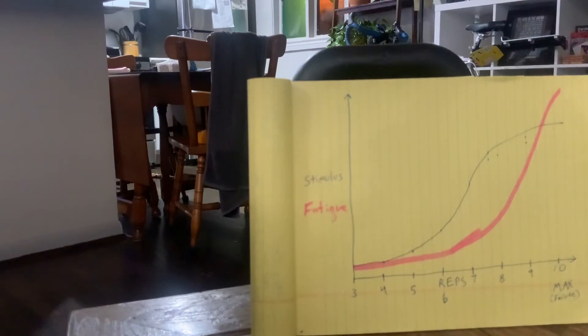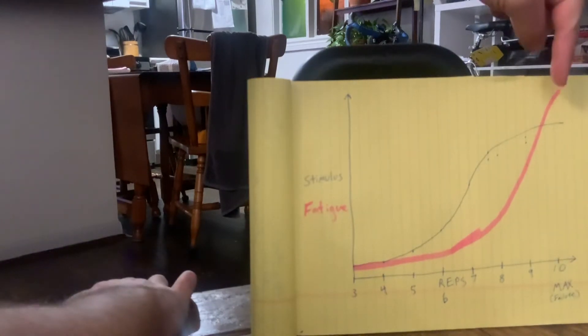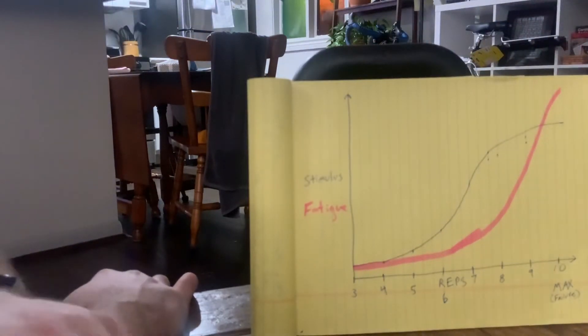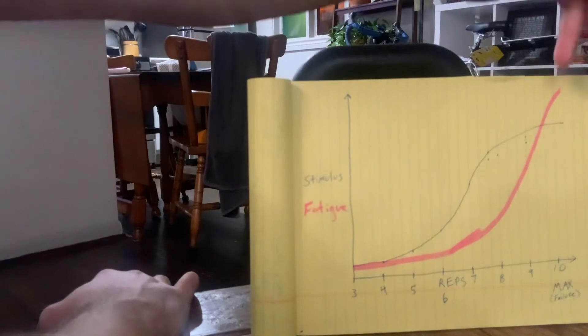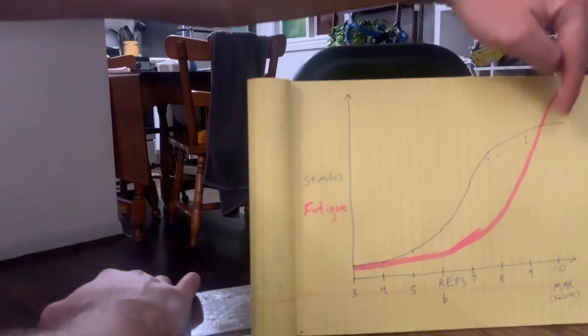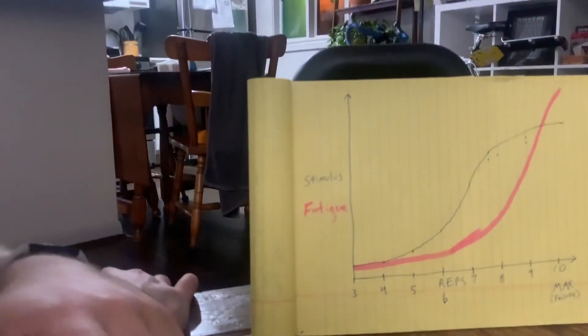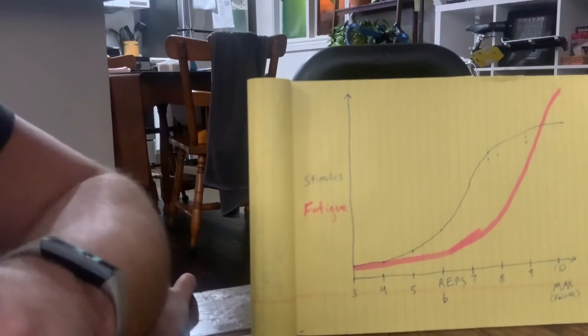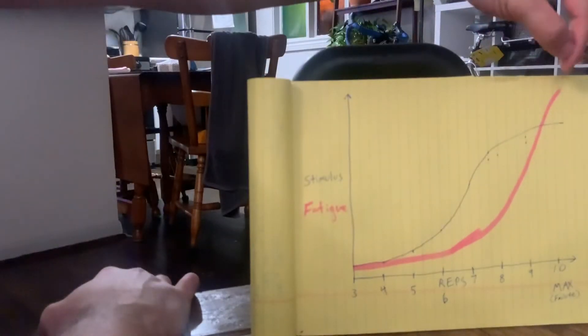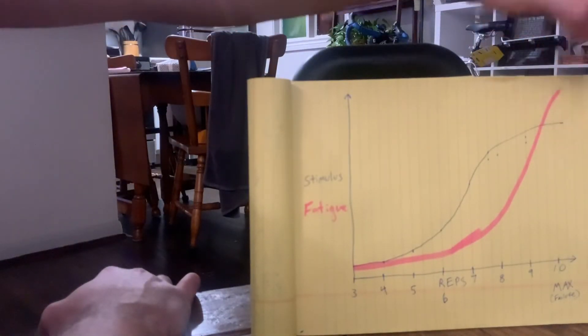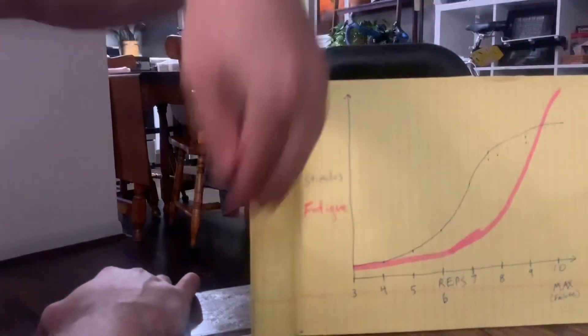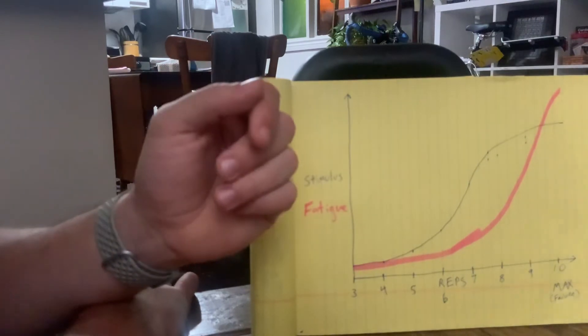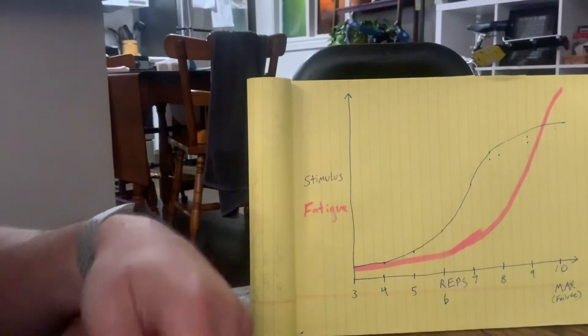So this does have some other implications though. If you push every set to absolute failure, you can see here the fatigue's very high. That fatigue can really start to build up and you can actually see the fatigue's higher than the stimulus. So that would come into play. Imagine if you were training six or seven days a week and you're pushing your fatigue up, or you're going all the way to failure on every single set. Your fatigue is going to skyrocket and you may not be able to maintain that for a long period of time.